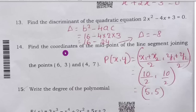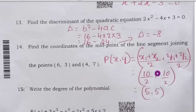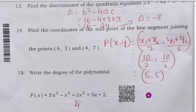Fourteenth question: find the coordinates of the midpoint of the line segment joining the points (6, 3) and (4, 7). Using the midpoint formula P(x, y) = ((x₁ + x₂)/2, (y₁ + y₂)/2) = (10/2, 10/2). Therefore, the midpoint is (5, 5).